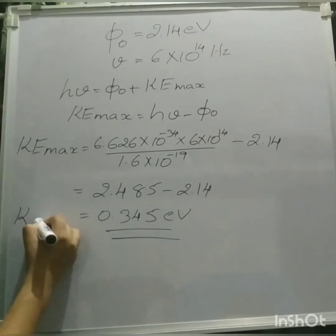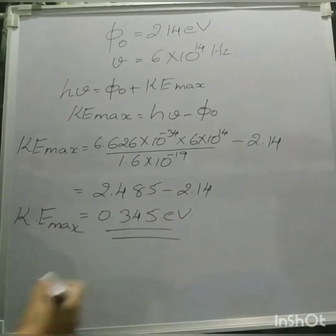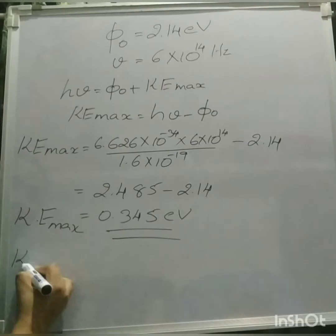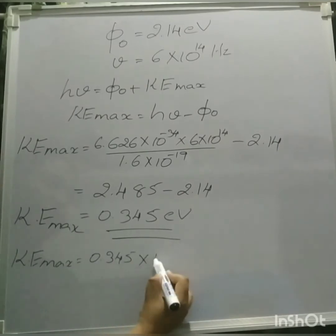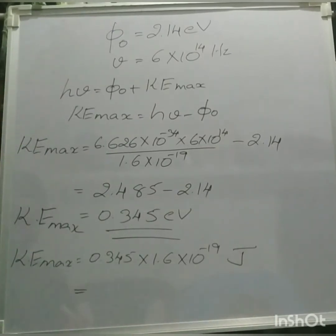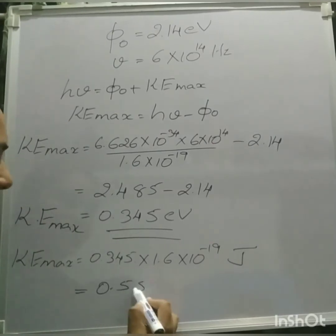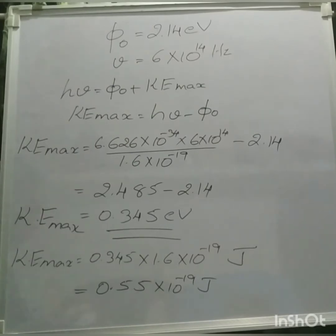So kinetic energy maximum is equal to 0.345 electron volt. Now if we need the value in Joules, we can multiply this electron volt value by 1.6 into 10 raised to minus 19. So kinetic energy maximum is equal to 0.345 into 1.6 into 10 to the power of minus 19 Joules, that is equal to 0.55 into 10 to the power of minus 19 Joules.